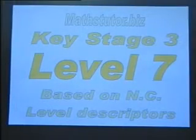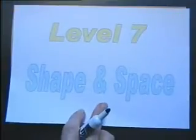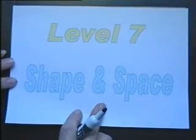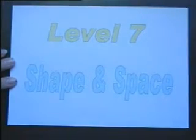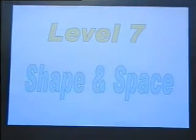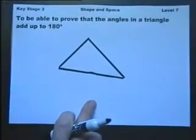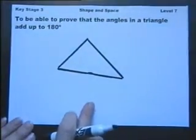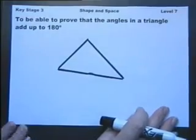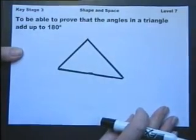Work based on the national curriculum level descriptors, and we're going to start Level 7 here on shape and space. To be able to prove that the angles in a triangle add up to 180 degrees. There are several ways of doing this.